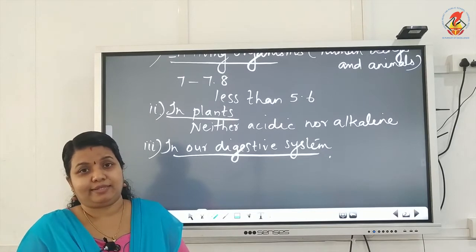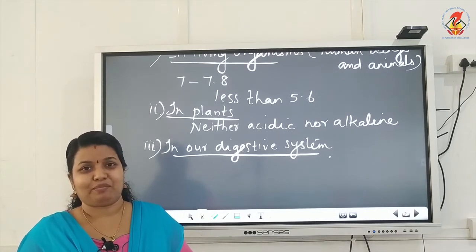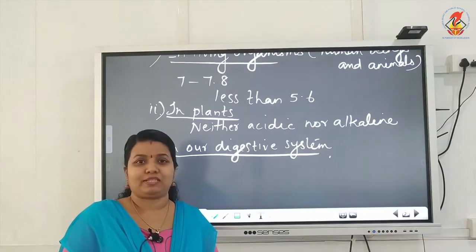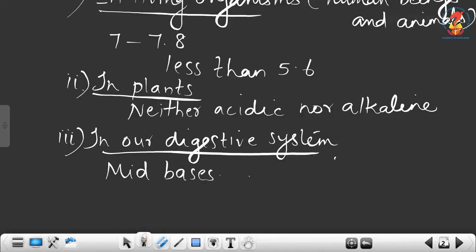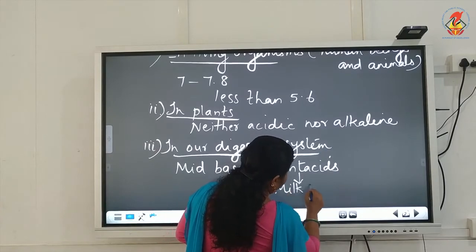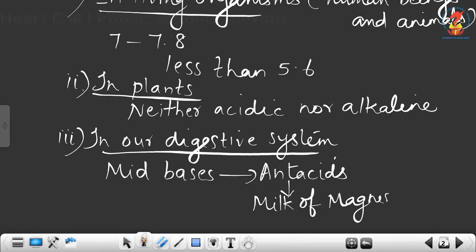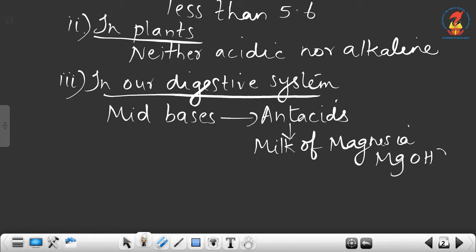How can acidity be treated? It is due to excess acid, so the excess acid has to be neutralized. In our stomach, a neutralization takes place — the excess acid produced is neutralized by mild bases. We call them antacids. Antacids are mild bases which can neutralize the excess acid produced in our stomach. Examples of antacids include milk of magnesia — formula Mg(OH)₂ — and baking soda — formula NaHCO₃.